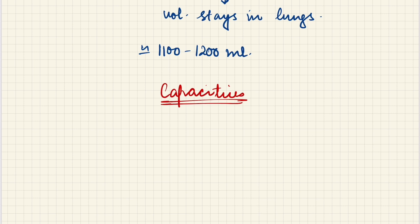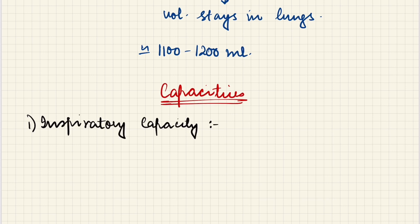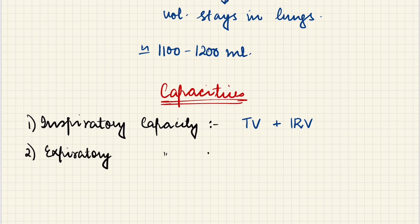Now let's talk about capacities. Capacities are nothing but the adding up of a few respiratory volumes. First, the inspiratory capacity — capacity means the total volume, not a single volume. When we talk about inspiratory capacity, it is the total volume of air that can be inspired after a normal expiration: the tidal volume we are inspiring already, plus the inspiratory reserve volume. Similarly, the expiratory capacity is the total volume that can be expired after a normal inspiration: tidal volume plus expiratory reserve volume.